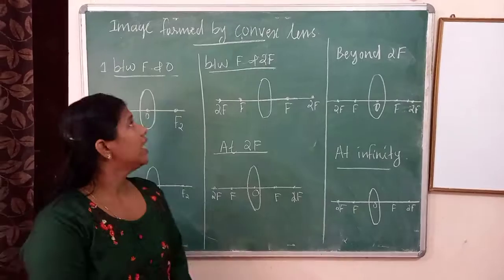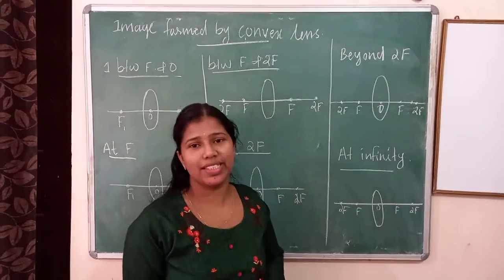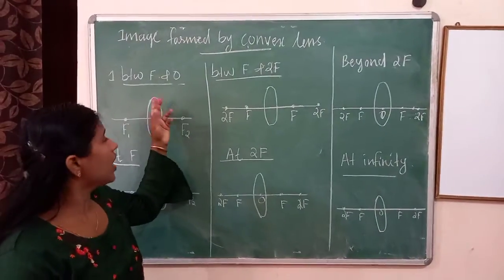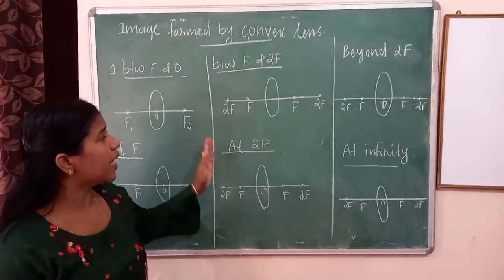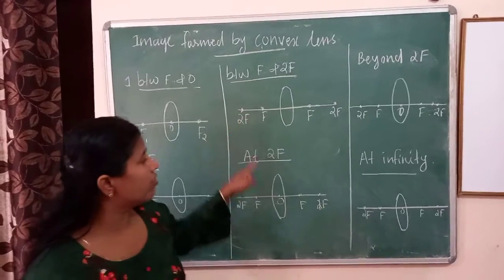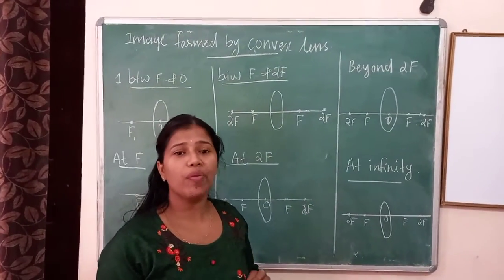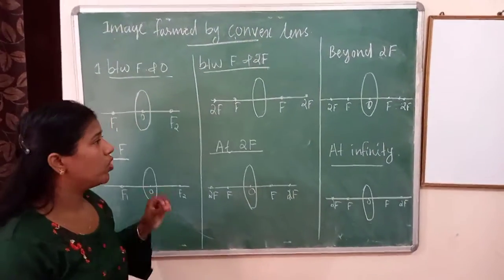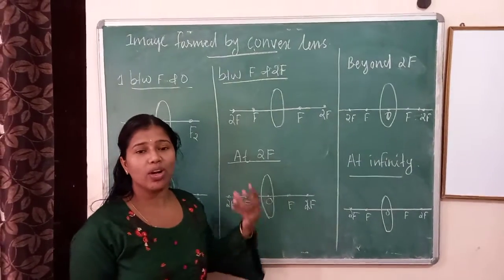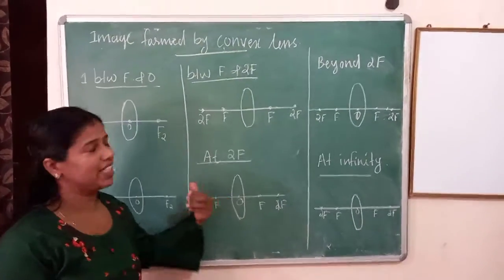Image formed by convex lens — there are six cases, and this is a very important topic. Most of the time in CBSE, a long answer type question is asked from this section.